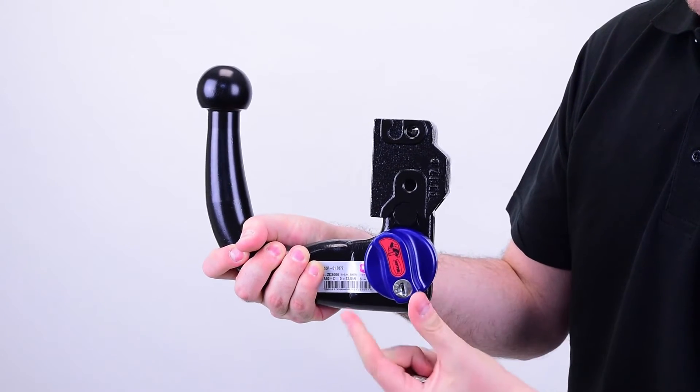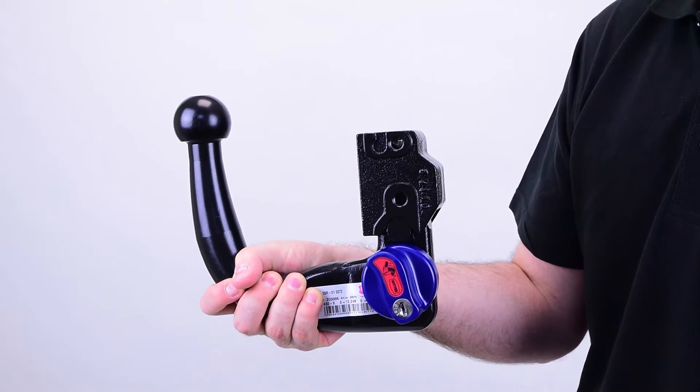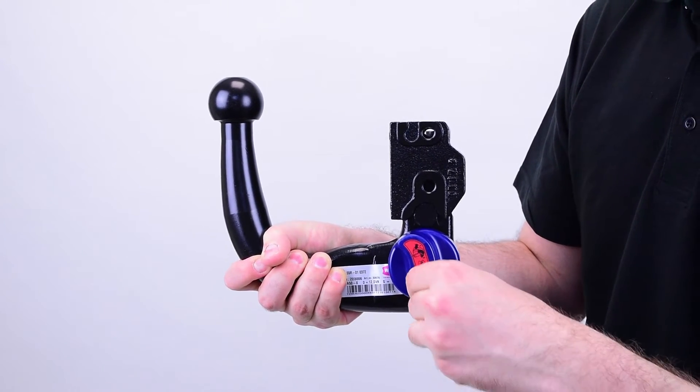When it is securely in place, the blue locking knob here will be vertical and then you can lock it in place with the key.